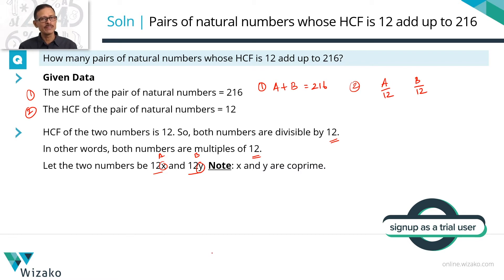They will have nothing in common means they have no factor in common other than 1. Then these two numbers are called coprime numbers.